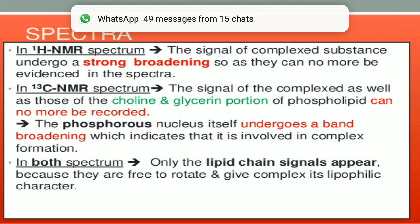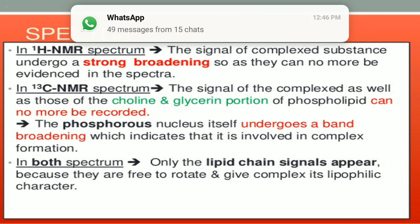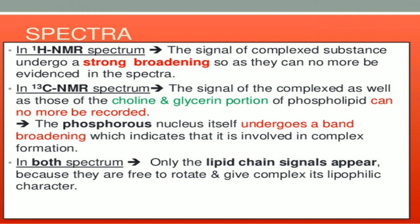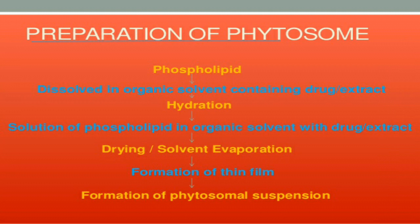Spectroscopic methods are generally used for evaluation of phytosome formation, such as proton NMR and C13 NMR, which are used to check the formation of phytosomes. This can be verified by band broadening of the phosphatidylcholine peak or spectra. After formation of phytosomes, the spectra of proton NMR and C13 NMR for choline can no longer be recorded — this is the confirmation of phytosome formation.